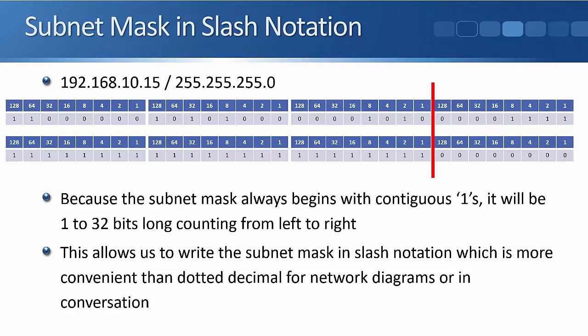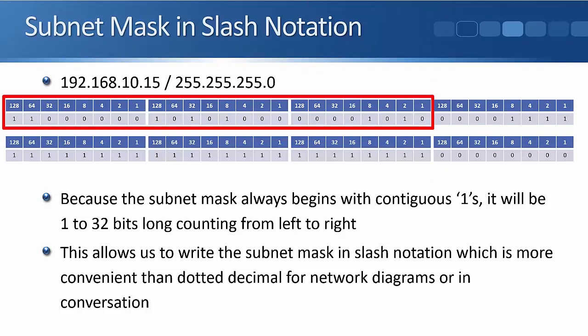If we had 255.255.0.0 as a subnet mask, we could write that as slash 16, and so on. When you configure a Cisco router or switch on IOS, you have to write the subnet mask out in full dotted decimal notation. But in conversation or on network diagrams, we more commonly use slash notation because it's much easier to say slash 24 and it takes up much less space, keeping diagrams neater and tidier.